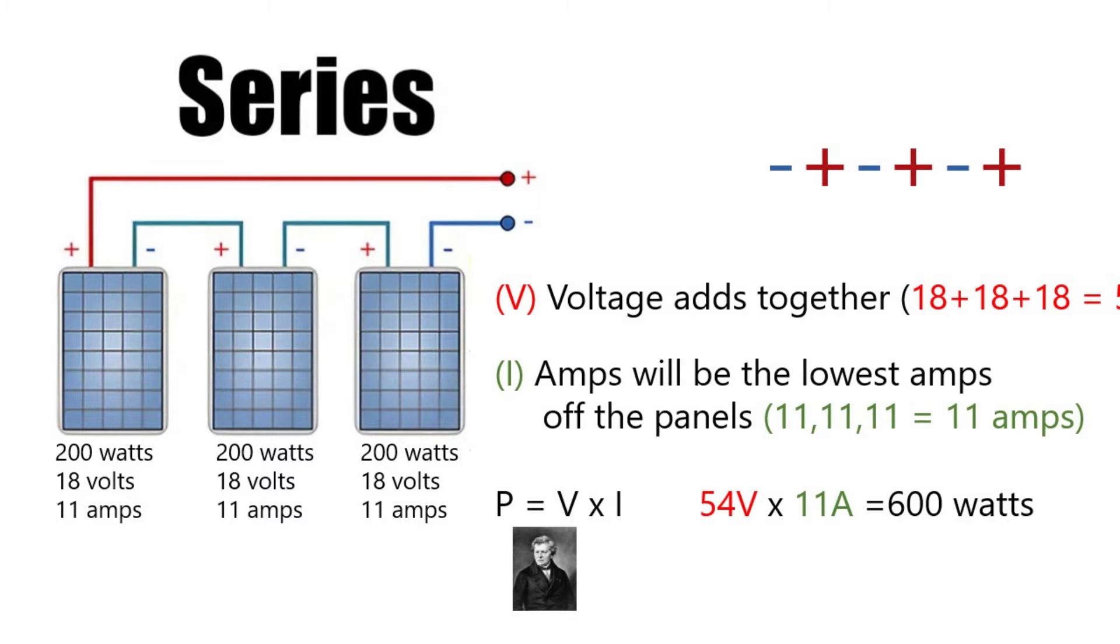If you connect them in series, the voltages will add together, so it will become 18 plus 18 plus 18 which is 54 volts. But the amps will be the lowest amp of those three solar panels when connecting in series. Here they have the same amps so it will become 11 amps, and 54 times 11 is 600, which means that you get the maximum result out of those three solar panels.